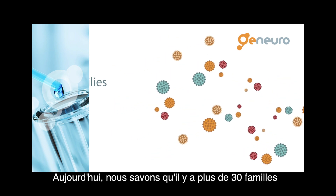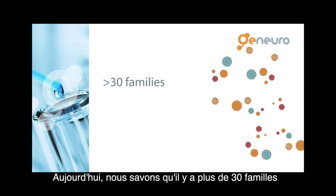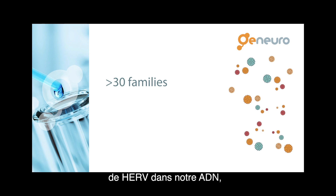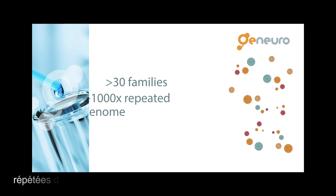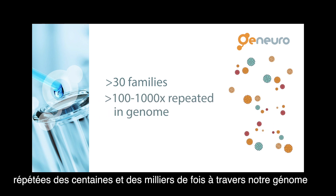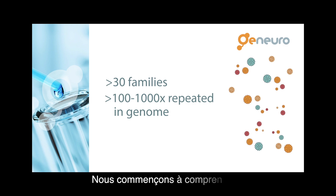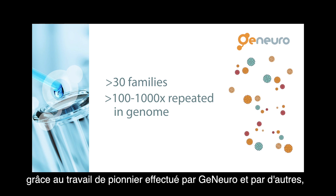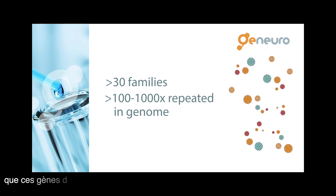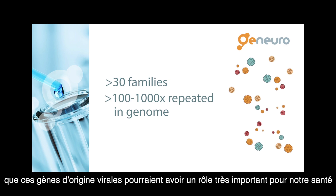Today we know that there are over 30 families of human endogenous retroviruses in our DNA, each repeated hundreds and thousands of times all over our genome. And we are starting to understand, from the pioneering work of Genuro and others, that they may play a major role in health and disease.